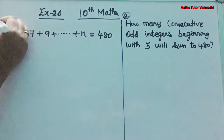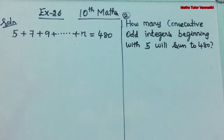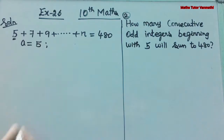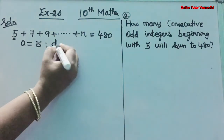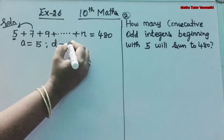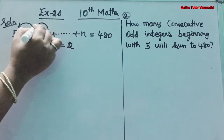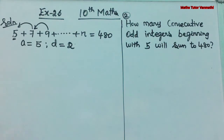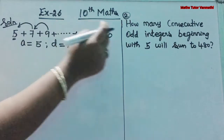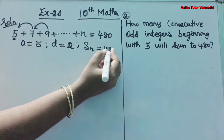From the question we have this series. We are going to write the first term: A is equal to 5. And the common difference D: 7 minus 5 is 2. Similarly, 9 minus 7 is also 2. The sum of N terms, SN, is equal to 480.